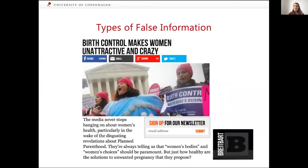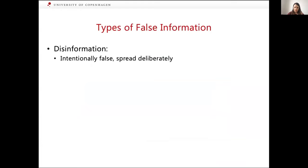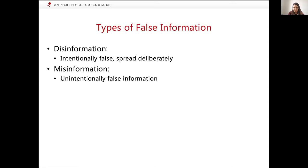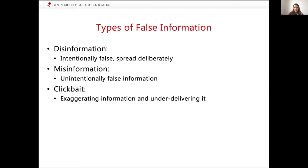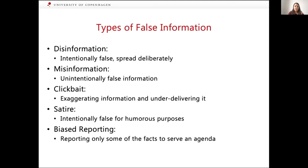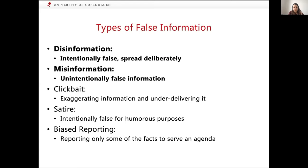So to sum up, there are many different types of false information: disinformation, which is spread intentionally and is false; misinformation, which is false but unintentional; clickbait, which exaggerates and under-delivers; satire; and biased reporting, which reports only some facts to serve an agenda. When it comes to fact-checking, we typically focus on disinformation and misinformation. There are also approaches to clickbait detection, satire detection, and biased reporting detection, but that's not what we typically refer to as fact-checking.